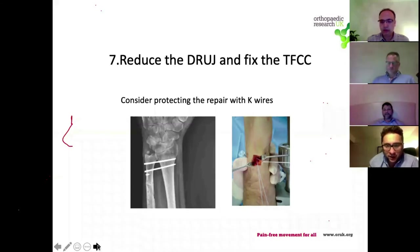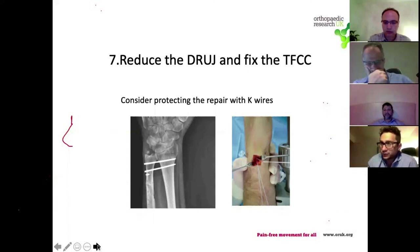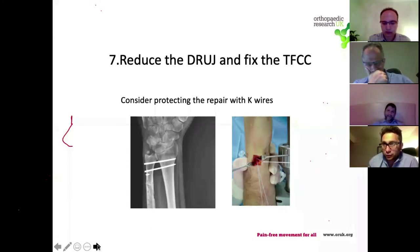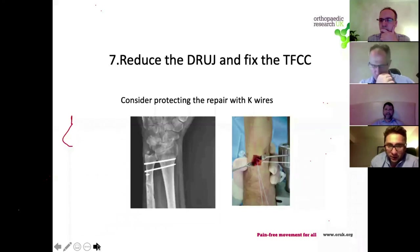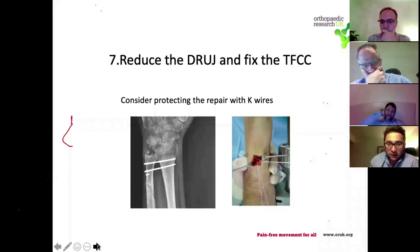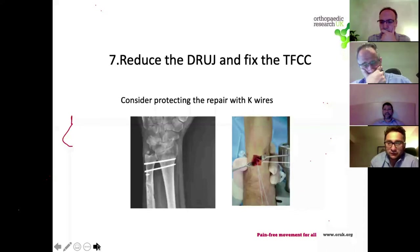If you are passing a DRUJ K-wire, make sure you leave it proud on both the radial side and the ulnar side so you can retrieve it should it break. For most cases I recommend not passing the wires until the very end - it should be one of the final steps of the operation - otherwise they are prone to bending and breaking.